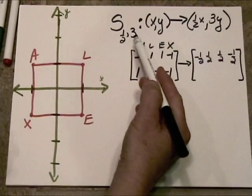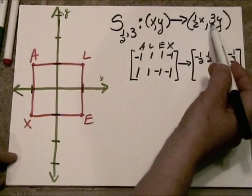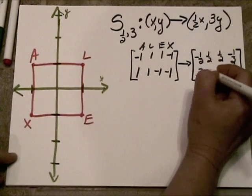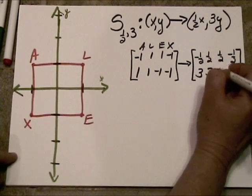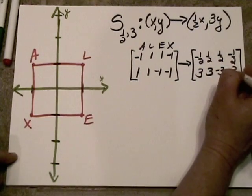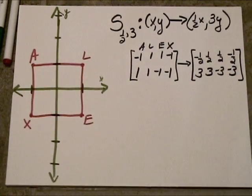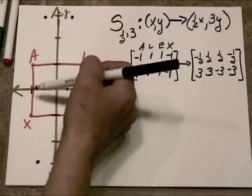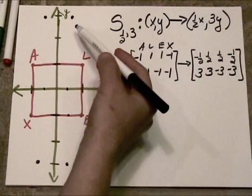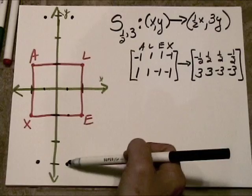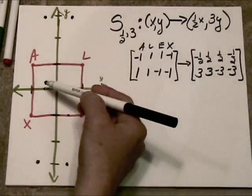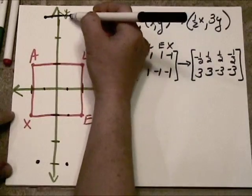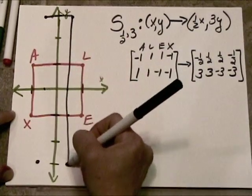And all of her y coordinates are going to get multiplied by three. They're going to triple in size. So this will become three, three, negative three, negative three. Now let me go ahead and graph these just to see what she will look like. Negative one-half, three, positive one-half, three, positive one-half, negative three, negative one-half, negative three. Boy, she ain't no square anymore.